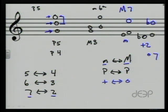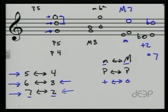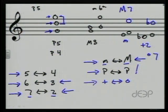These rules are hard and fast. Fifths always invert to fourths. Fourths always invert to fifths. Sixths invert to thirds. Thirds invert to sixths. Sevenths to seconds. Seconds to sevenths. Minors invert to major. Majors to minor. Perfects always invert to other perfects — hence the name perfect. And augmenteds invert to diminisheds, and diminished inverts to augmented, all the time.